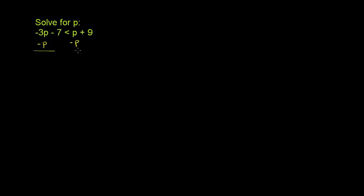On the left-hand side, negative 3p minus p is negative 4p, and then we still have a minus 7, so it is going to be less than p minus p — those cancel out — and it is less than 9.